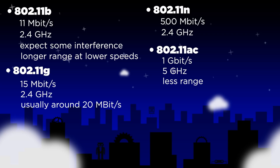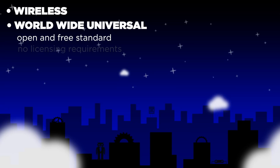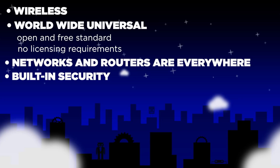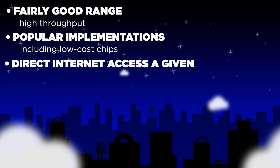Here are some of the good things about Wi-Fi: it's wireless, worldwide universal, a completely open and free standard with no licensing requirements. Networks and routers are available anywhere. There's good security and encryption built in — make sure you use it. Wi-Fi can be used as an ad hoc network or connected to the wider Internet. It's got fairly good range and high throughput, with popular implementations everywhere including very low-cost chip versions. Direct Internet access is pretty much a given, and it's pretty cheap — Wi-Fi modules are only a few dollars per unit.